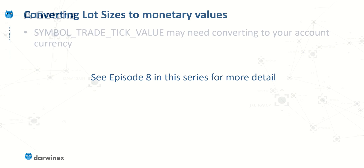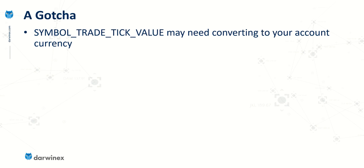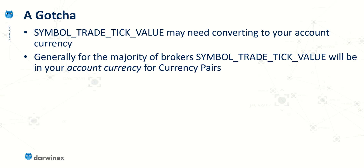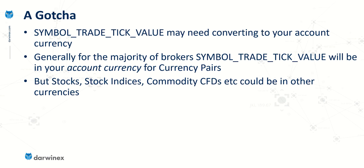Despite that, there was still a gotcha: you need to know what currency the tick value is in. Generally speaking, for the vast majority of brokers, for currency pairs, this will be in your own account currency — so if you have an account in euros, it will be in euros; if in US dollars, it will be in US dollars. That's fairly simple for Forex. But when it comes to other CFDs such as stocks, stock indices, or commodity CFDs, these may well be in alternative currencies to your own account currency. What makes this slightly more complex is the fact that different brokers will also use different account currencies.